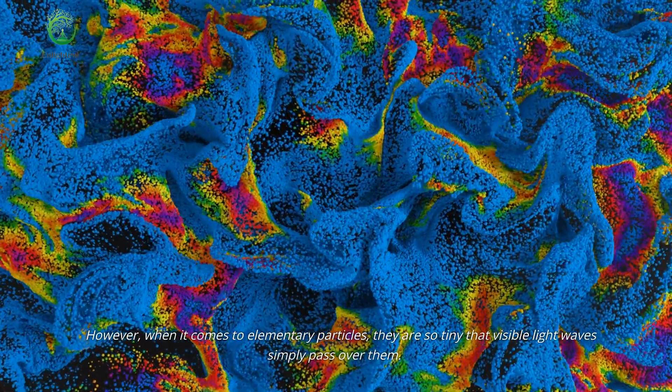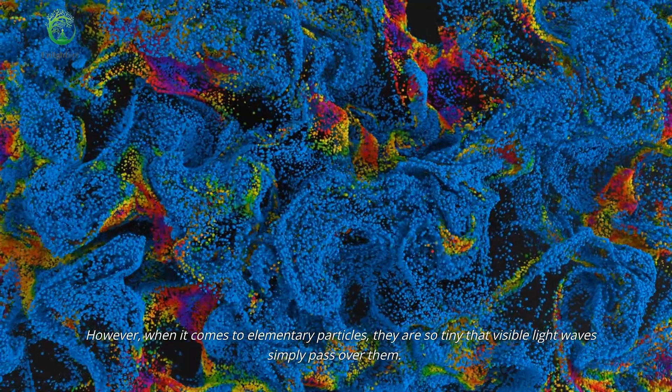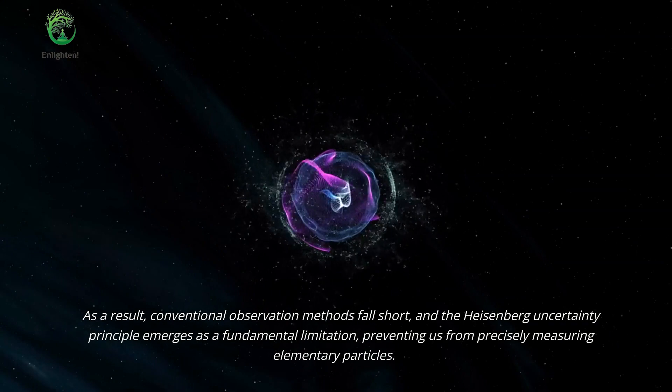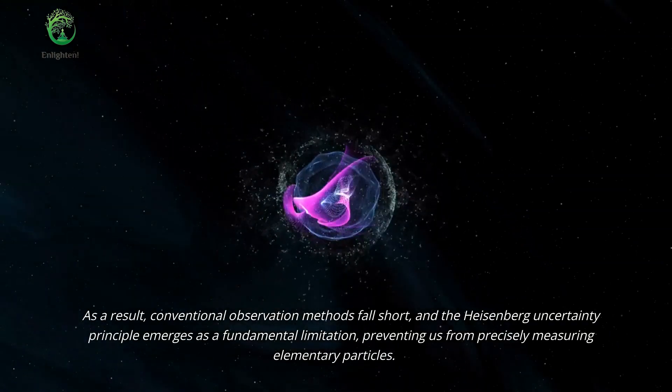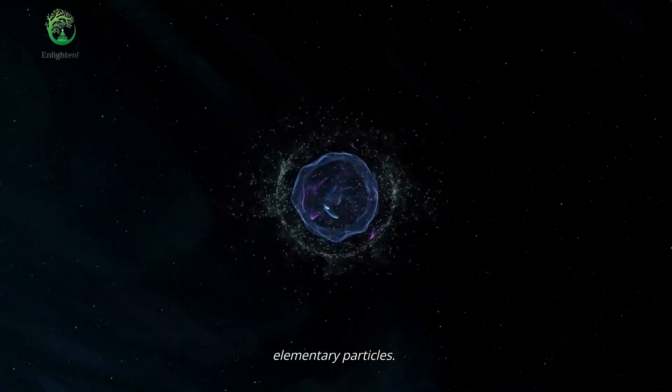However, when it comes to elementary particles, they are so tiny that visible light waves simply pass over them. As a result, conventional observation methods fall short, and the Heisenberg uncertainty principle emerges as a fundamental limitation, preventing us from precisely measuring elementary particles.